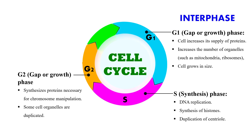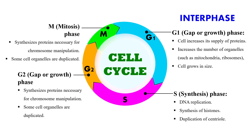After the S phase, the next sub-phase of interphase is G2, that is gap 2 or growth 2 phase. In this phase the cell further synthesizes some other proteins required, and some organelles also get duplicated. With G1, S, and G2 complete, interphase is finished and the cell has prepared itself for the next phase, which is the M phase — that is mitosis — where the cell divides to make two daughter cells.